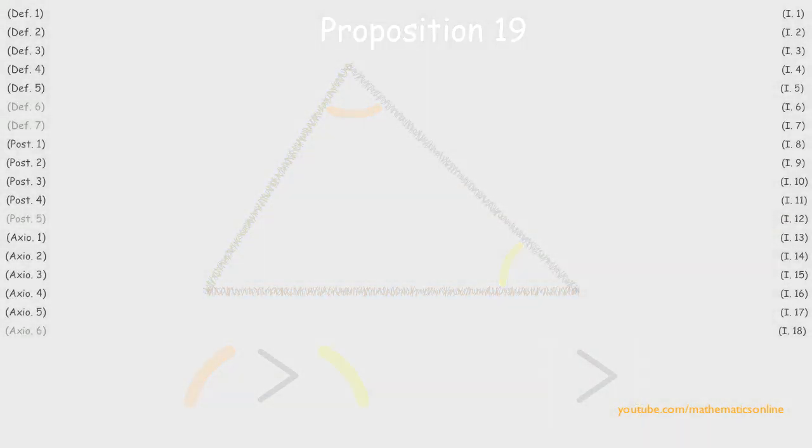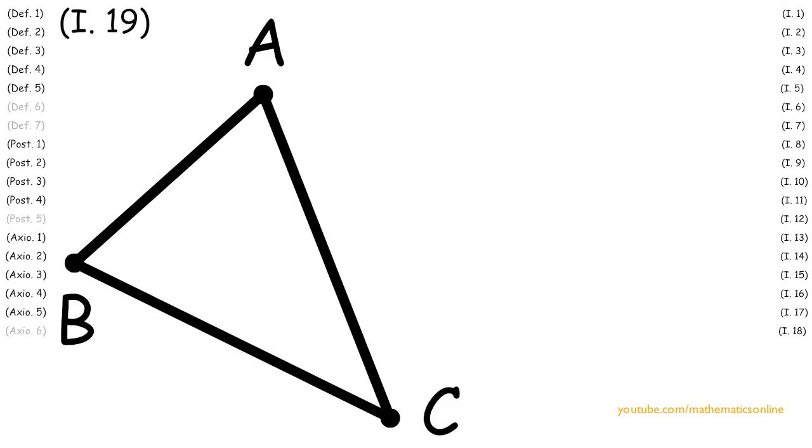To begin this proposition, we are given triangle ABC, and we are also given that angle ABC is greater than angle ACB.